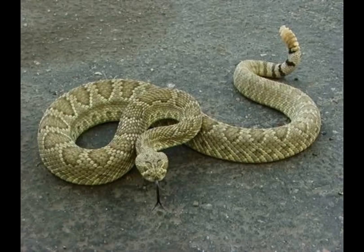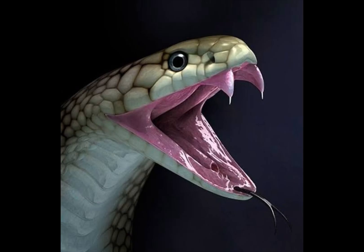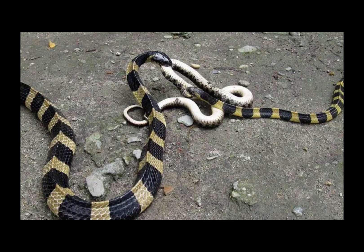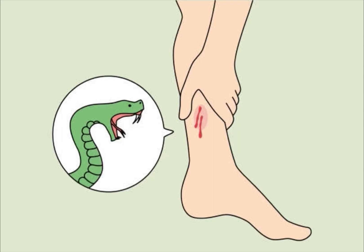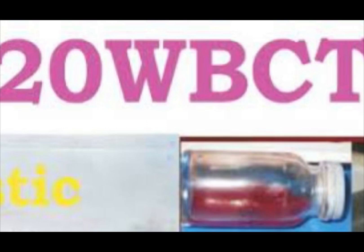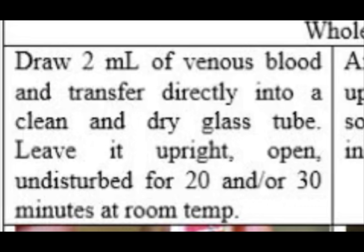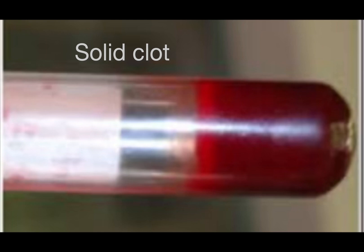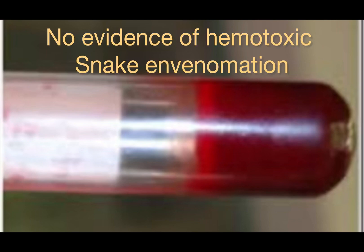If a patient is admitted in the emergency room with a snake bite, we perform the whole blood clotting time (WBCT) test. Draw 2 ml of venous blood and transfer directly into a clean, dry tube. Leave it upright and open, undisturbed for 20 minutes at room temperature. After exactly 20 minutes, pick up and invert the tube. If a solid clot is retained, the test indicates normal coagulation.